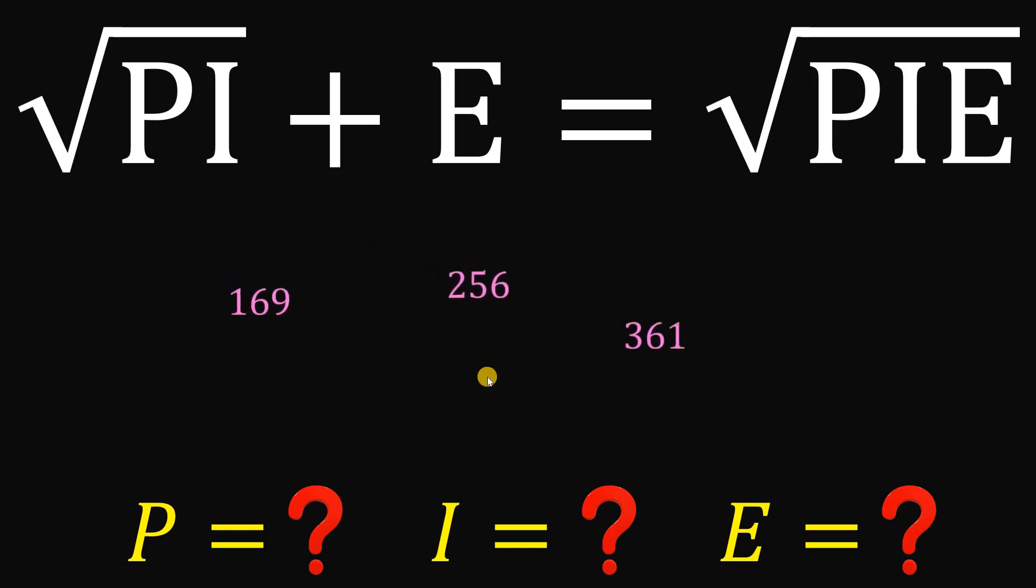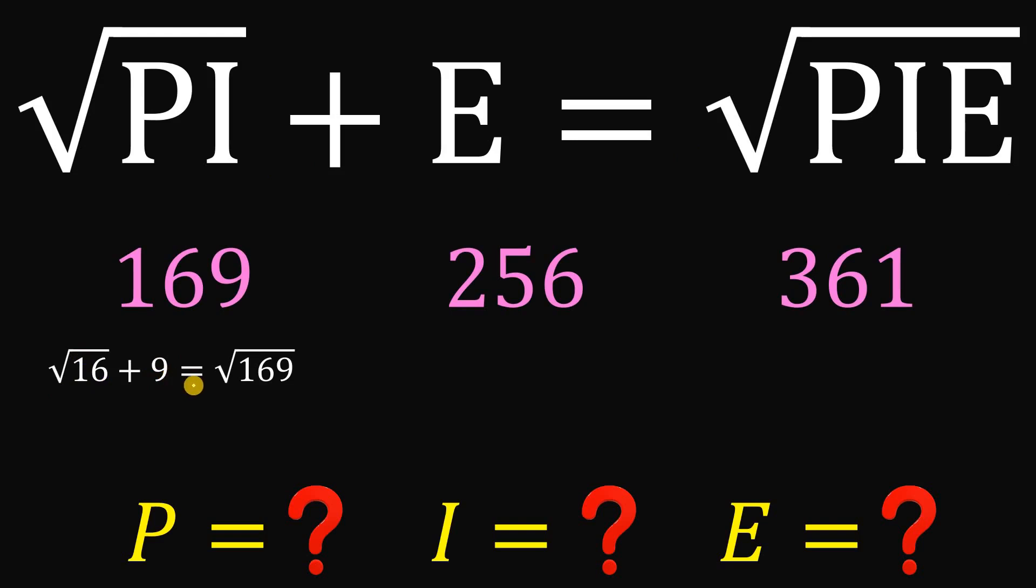Now let's focus on these three numbers. And then let's apply this equation. Square root of PI plus E equals square root of PIE. So let's apply this. Square root of 16 plus 9 equals square root of 169. For 256, we have square root of 25 plus 6 equals square root of 256. And 361 is just square root of 36 plus 1 equals square root of 361. Now square root of 16 is 4 and square root of 169 is 13. Square root of 25 is 5 and square root of 256 is 16. Square root of 36 is 6, and square root of 361 is 19.